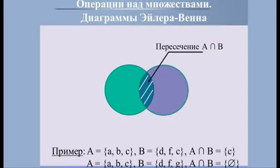Если общих элементов нет, то пересечением является пустое множество. Например, если A = {A, B, C} и B = {Д, Ф, С}, то только один общий элемент С, поэтому A ∩ B = {С}. В другом примере, если A = {A, B, C} и B = {Д, Ф, Г}, то нет общих элементов, поэтому A ∩ B = ∅.